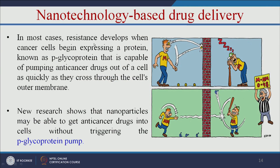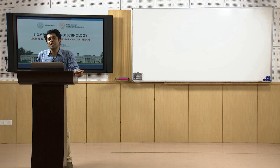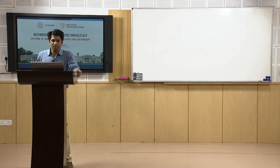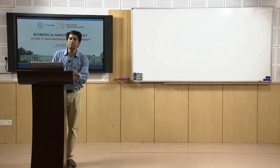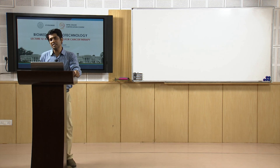In most cases, resistance develops when cancer cells begin to express a protein known as p-glycoprotein. This p-glycoprotein is capable of pumping anti-cancer drugs out of a cell as quickly as they cross through the cell's outer membrane. When you use nanoparticles, however, they are able to get anti-cancer drugs into cells without triggering the p-glycoprotein pump — the nanocarrier escapes the pump, enters the cell, and releases the anti-cancer drug.